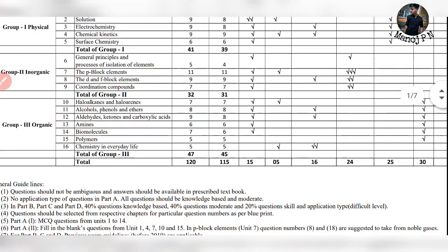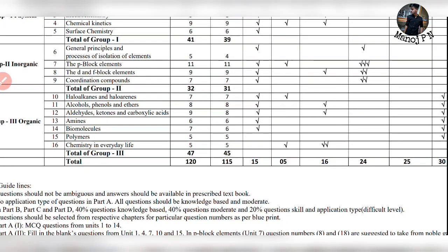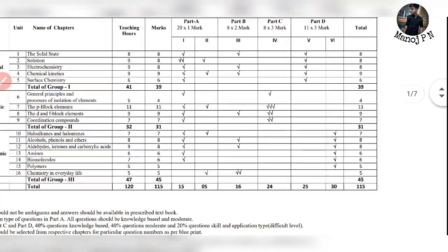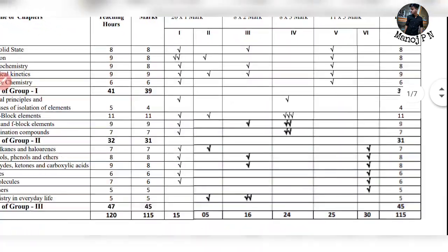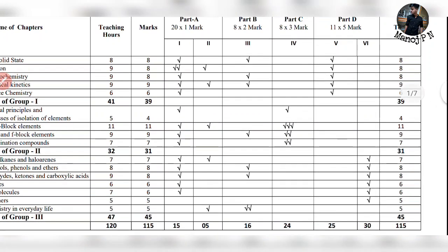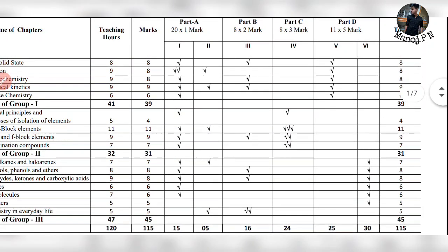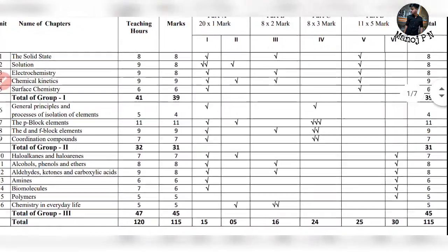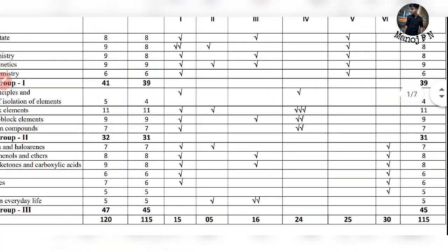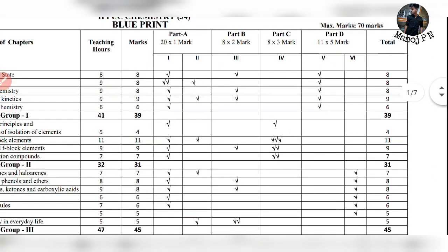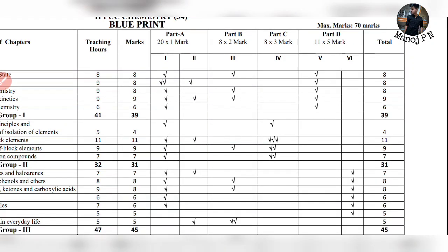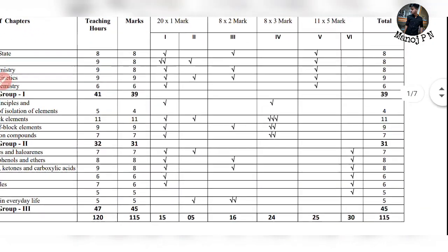Next is organic. So organic is simple — 1, 2, 3, 4, 5, 6, 7 chapters. You can do all important chapters. Part B is for 7 marks. And next part — alcohol, phenols and ether. Simple question, simple chapter. Part A MCQ part and Part B 2 marks question and Part D. So this is organic — Part D.